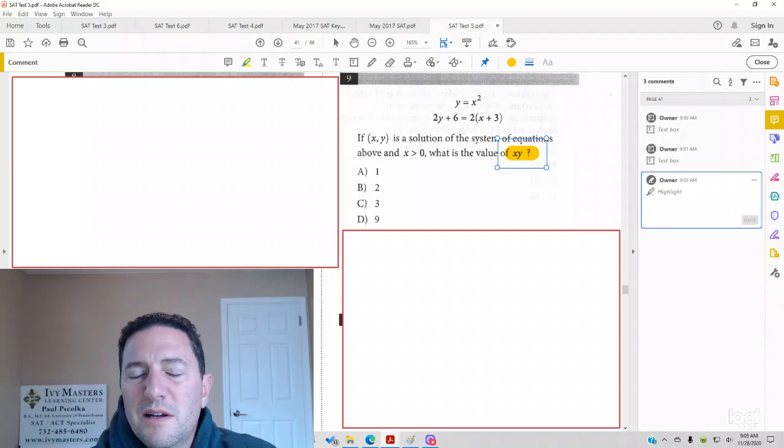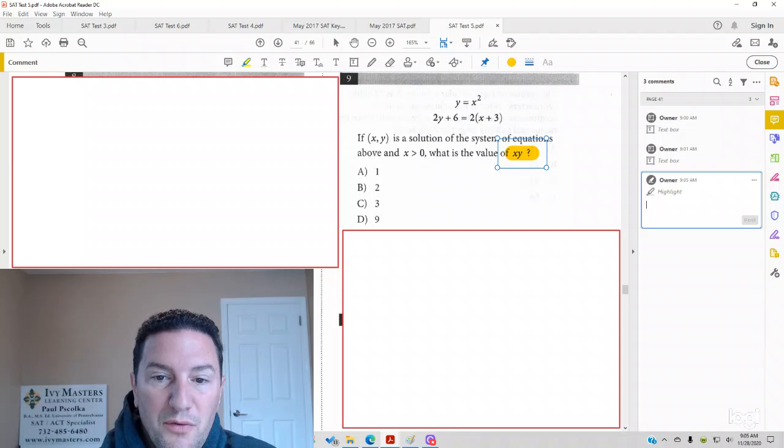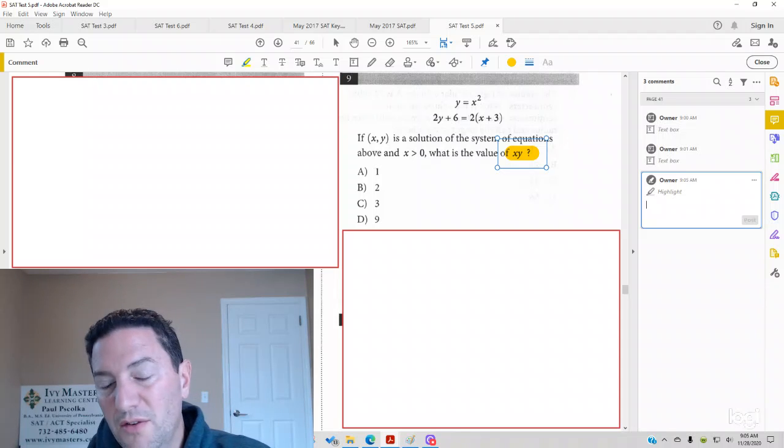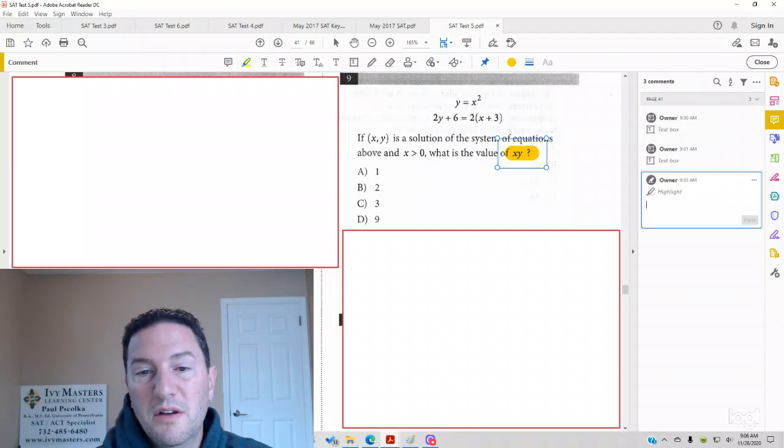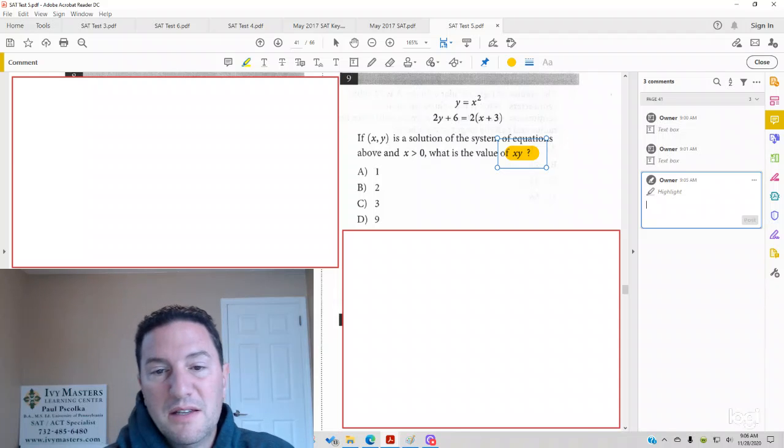One thing you want to make sure that you take note of is it's asking you for xy. Typically, they'll give you the value for x in the answer choices, they'll give you the value for y in the answer choices, and of course, they'll give you the right answer, which is x times y.